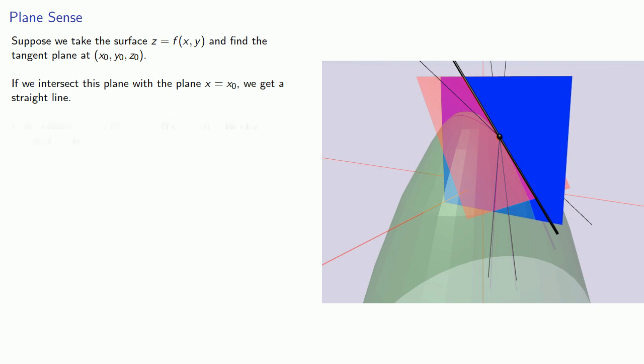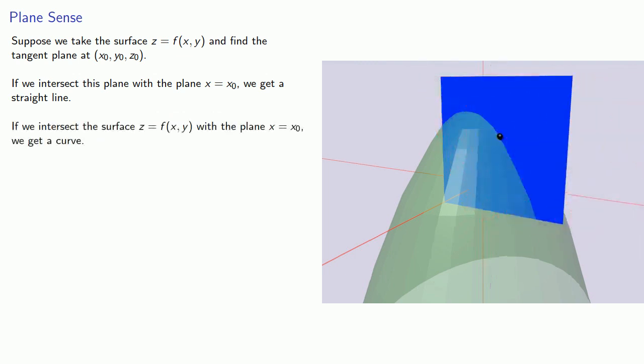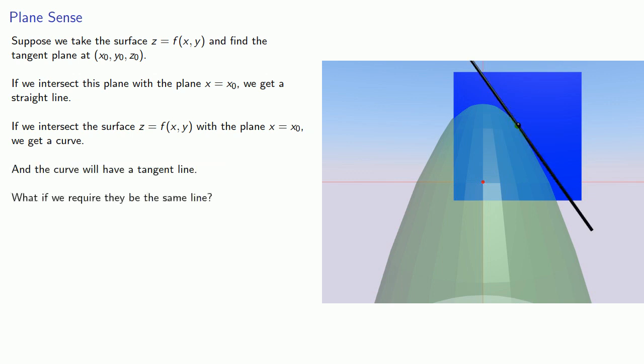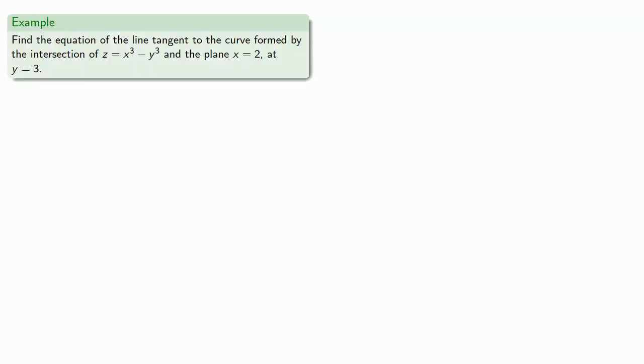Meanwhile, if we intersect the surface with the plane x equals x0, we get some sort of curve in the plane and that curve will have a tangent line. So what if we require they be the same line? Well, let's try it out.